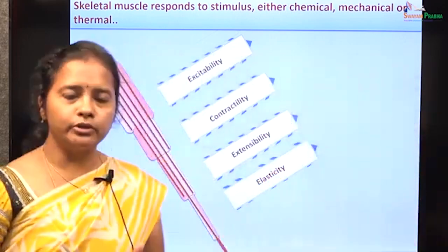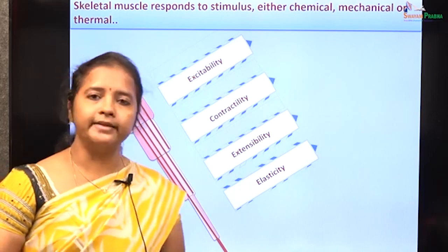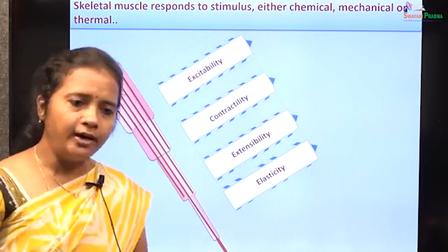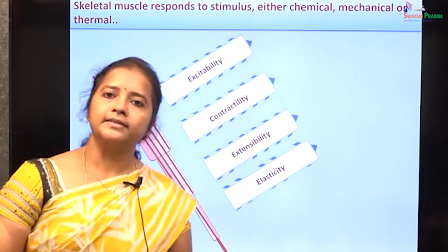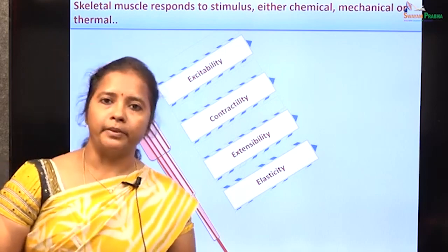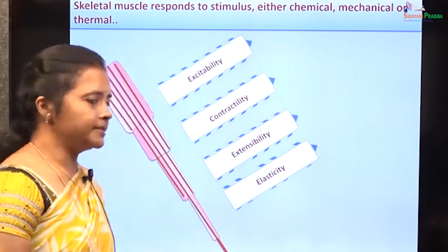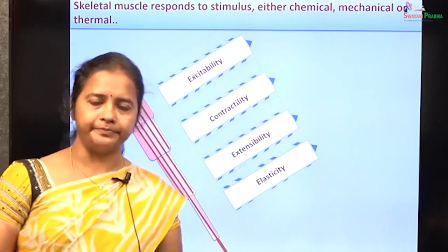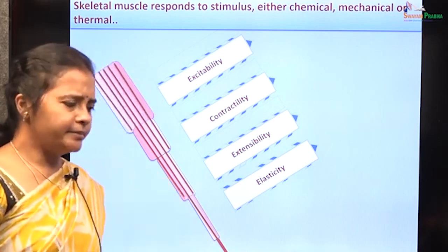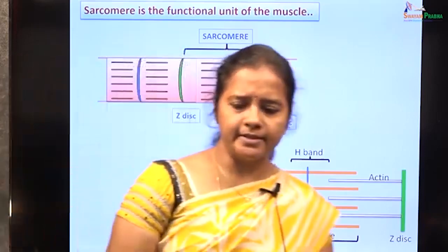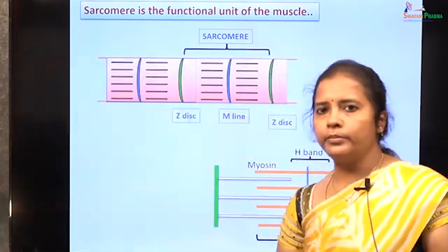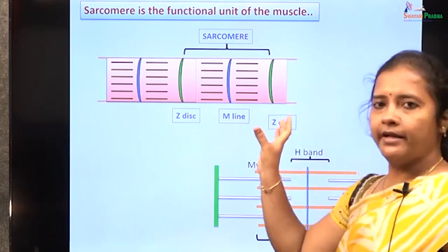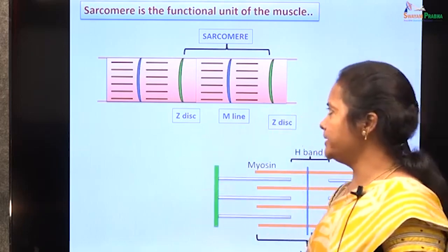Skeletal muscles are also extensible — they respond to stretch — and they can regain their original length because of their elastic properties. These properties are mainly due to the presence of other proteins besides actin and myosin, especially titin, along with the viscous-elastic properties of skeletal muscle which make them extensible as well as elastic in nature.